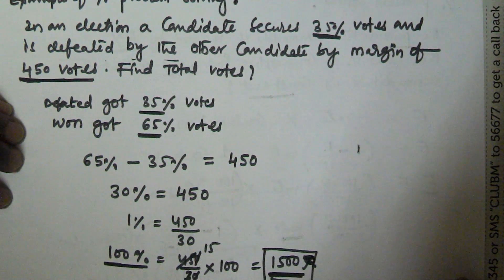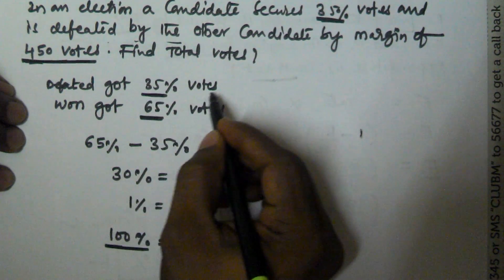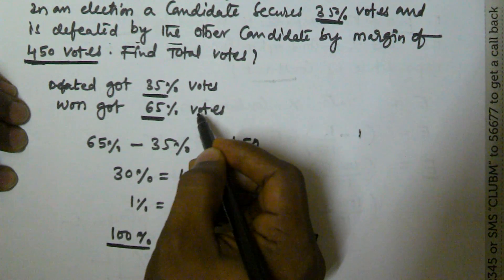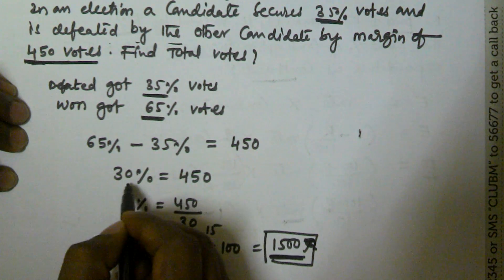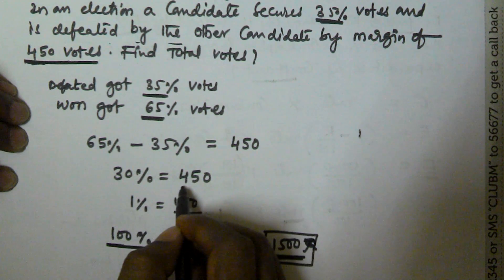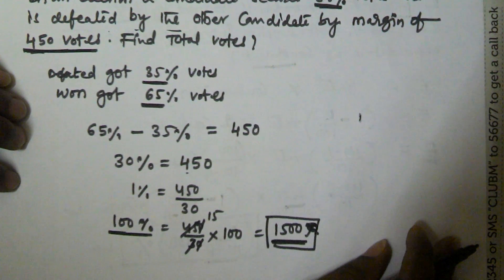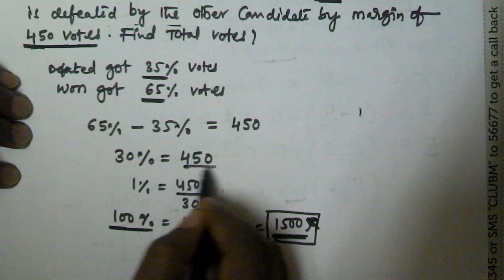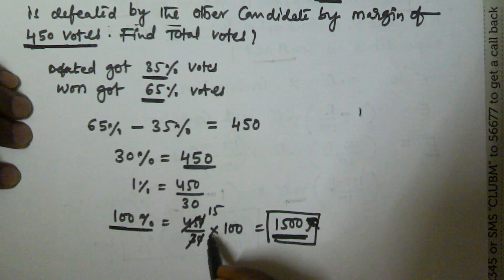The person who got defeated got 35% votes and the person who won got 65% votes. When we subtract, 65 minus 35 gives 30% of votes, and that 30% equals 450 because the winner defeated the other by a 450 vote margin. So 1% is equal to 450 by 30, and 100% of votes equals 450 by 30 into 100.